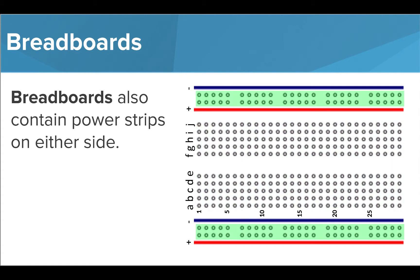The outside edges of a breadboard contain four connected strips that can be used to bring power to the components on your board. Let's take a deeper look at these parts.